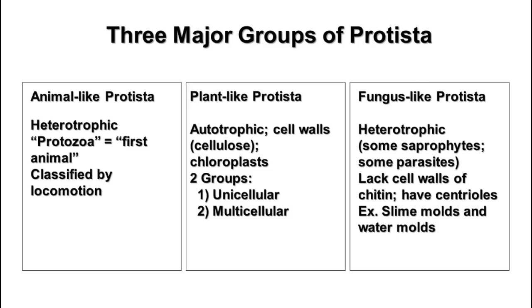The third group is the fungus-like protista. They are also heterotrophic. Some of them are saprophytes, meaning they live on dead or decaying material, and some are parasites. Like fungi, they secrete enzymes to digest their surroundings and then absorb the nutrients. They do not have cell walls made of chitin like fungi do, but they do have centrioles. Examples include slime molds and water molds.